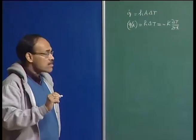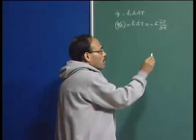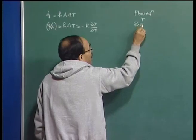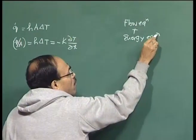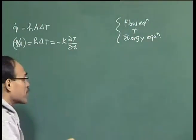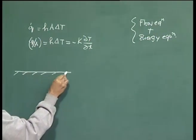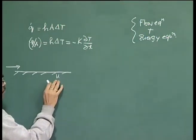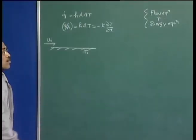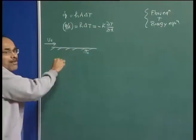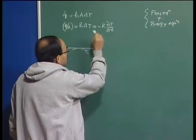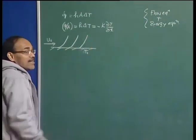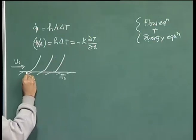In many classical situations, it is possible to solve the flow equation and the energy equation — that is the thermal energy balance equation. If you solve these two, for example in the classical scenario of flow over a flat plate, where the plate is heated to a constant temperature T₀, by solving the equations applicable to this simplified boundary layer flow, one can calculate the temperature profile at every point.